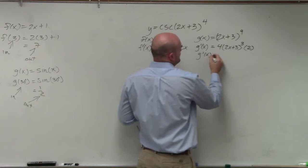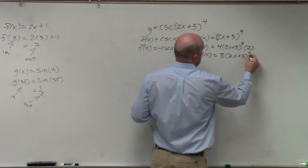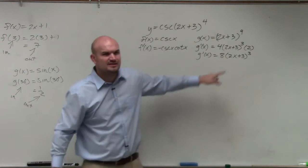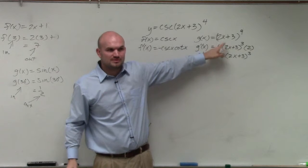So therefore, g prime of x equals 8 times 2x plus 3 cubed. Does everybody see how I did the chain rule in my head on this one? Anybody have any questions on this one?